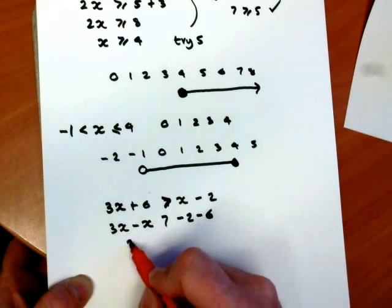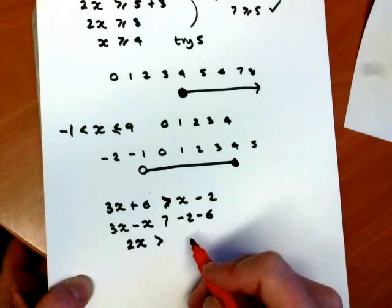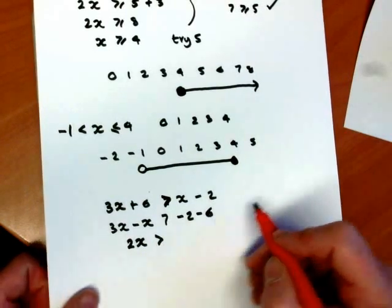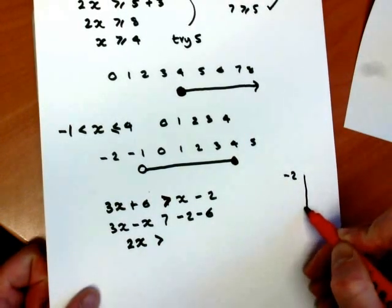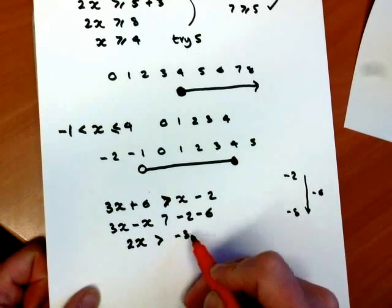Collect the terms together. 2x, 3x minus x is 2x. And minus 2 minus 6, so you're at minus 2, go down minus 6, you're at minus 8.